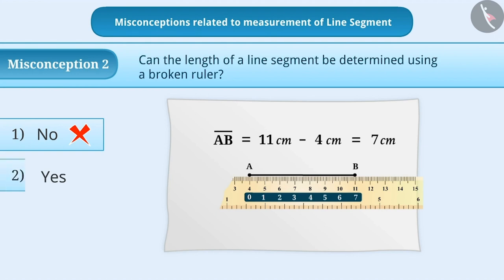Therefore, the correct answer is option 2. While finding the length using a broken ruler, sometimes children forget to subtract the number at the starting point from the number written at the end point and give the answer as 11 cm.